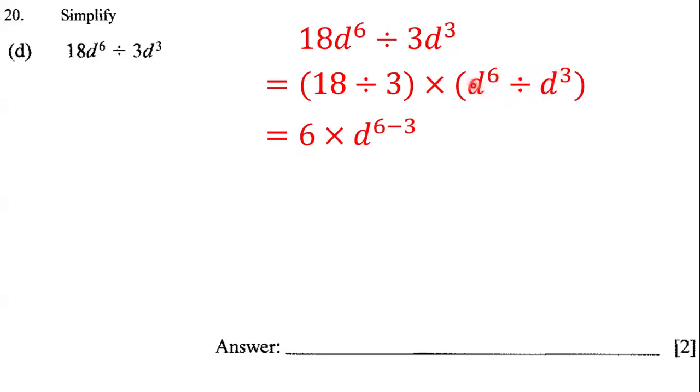So we have d to the power of six divided by d to the power of three. They have the same base, which is d, and so we have to subtract the powers. We have d to the power of six minus three.